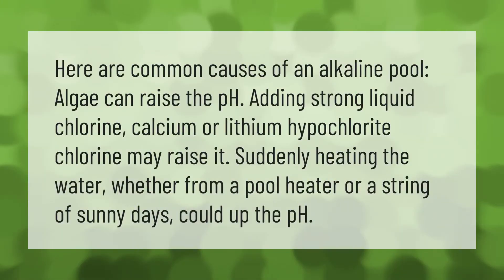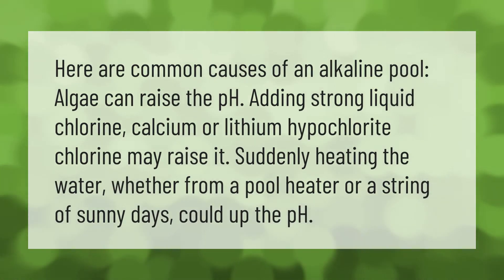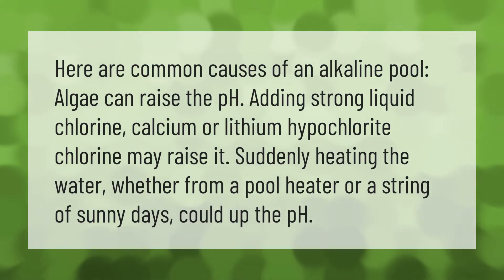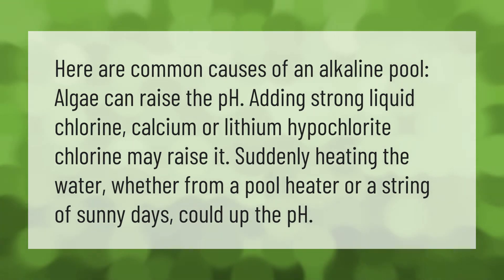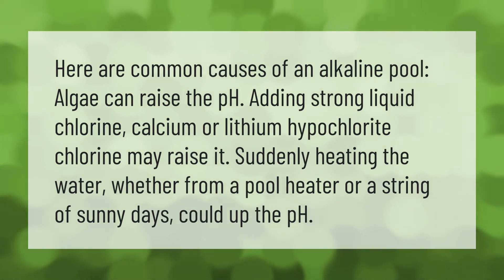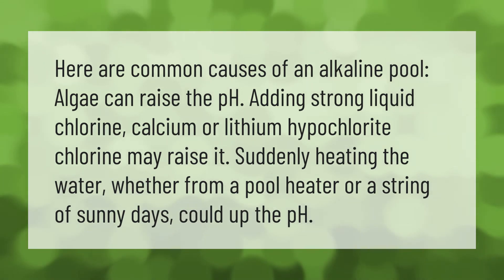Here are common causes of an alkaline pool: algae can raise the pH; adding strong liquid chlorine, calcium, or lithium hypochlorite chlorine may raise it; and suddenly heating the water, whether from a pool heater or a string of sunny days, could also up the pH.